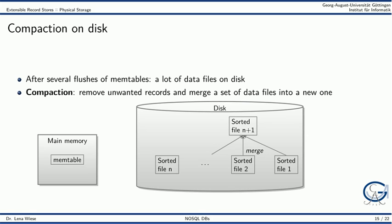After several flushes of the mem tables, there are a lot of data files on disk. A process called compaction removes unwanted records and merges a set of data files into a new one.